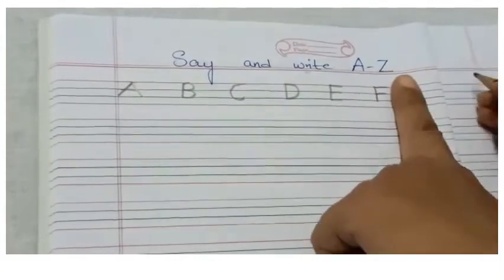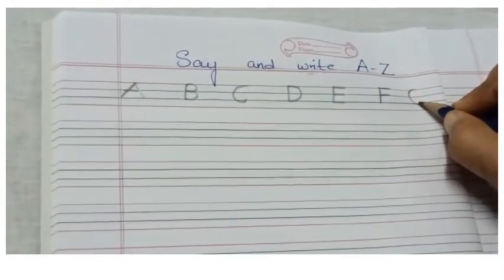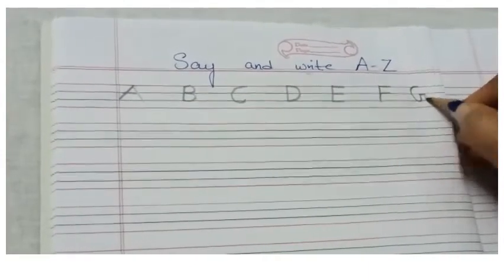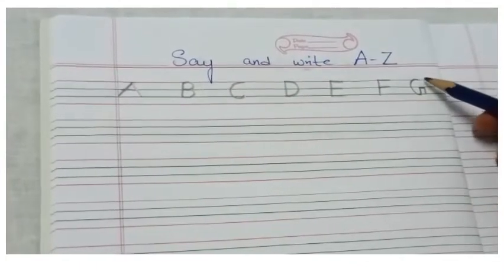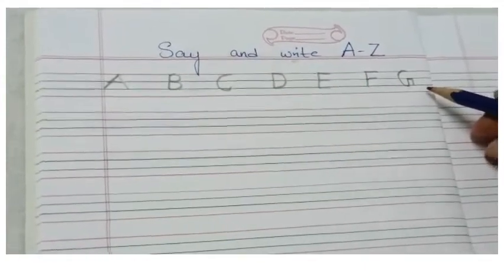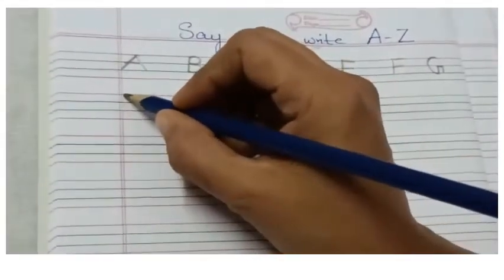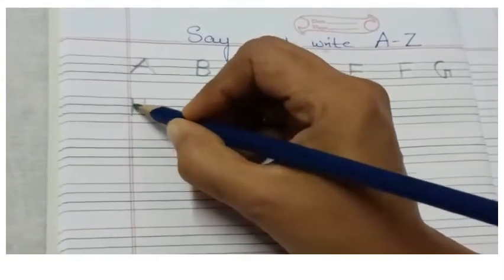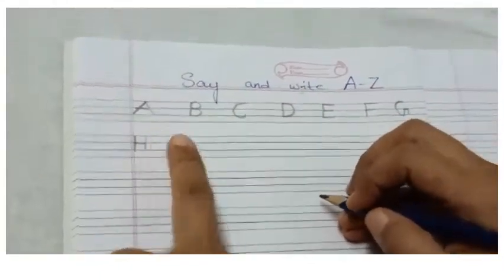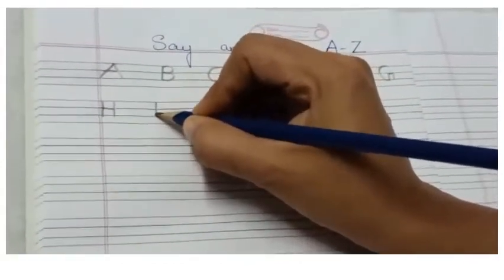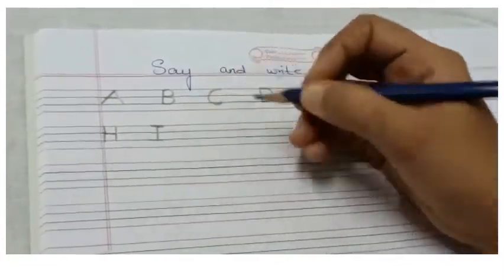Capital letter G — give a finger space and then we are going to write capital letter G. Left curve, standing line, sleeping line, standing line — capital letter G. All these letters we have written in the first three lines by giving proper space. Capital letter H — standing line, standing line, sleeping line — capital letter H. Again give one finger space and write capital letter I — standing line, sleeping line, sleeping line — capital letter I.